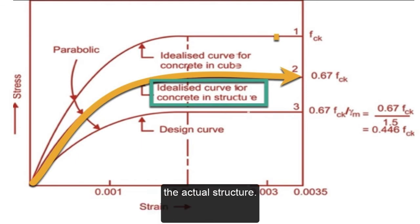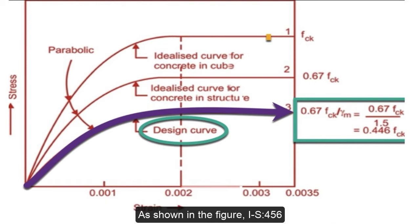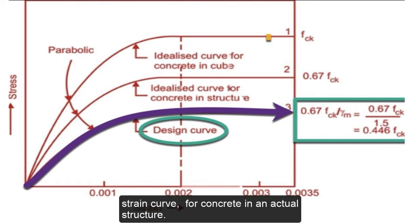Curve number three is a design curve for a structure. As shown in the figure, IS 456-2000 specifies the idealized design stress-strain curve for concrete in an actual structure. For the purpose of design in limit state method, the compressive strength of concrete in the structure is assumed to be